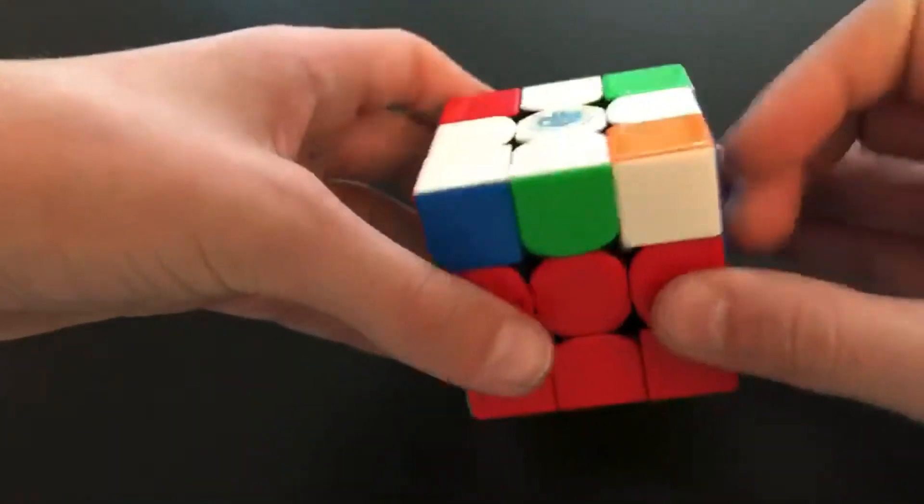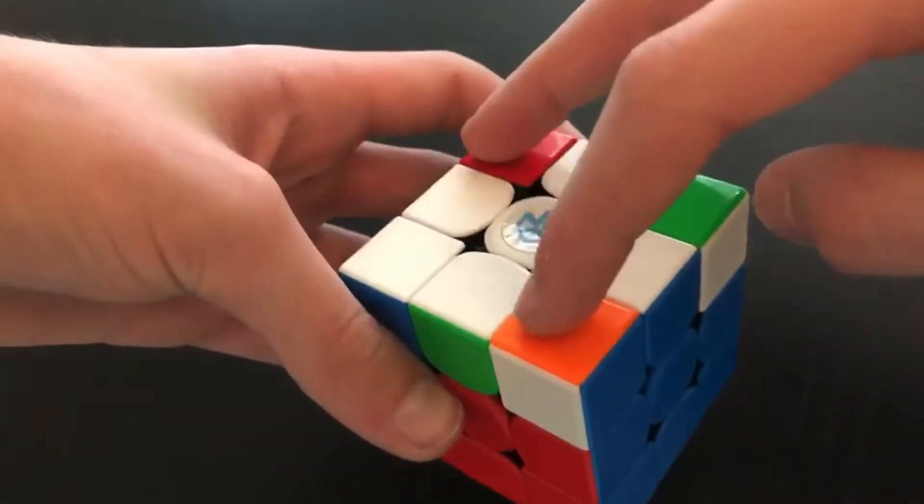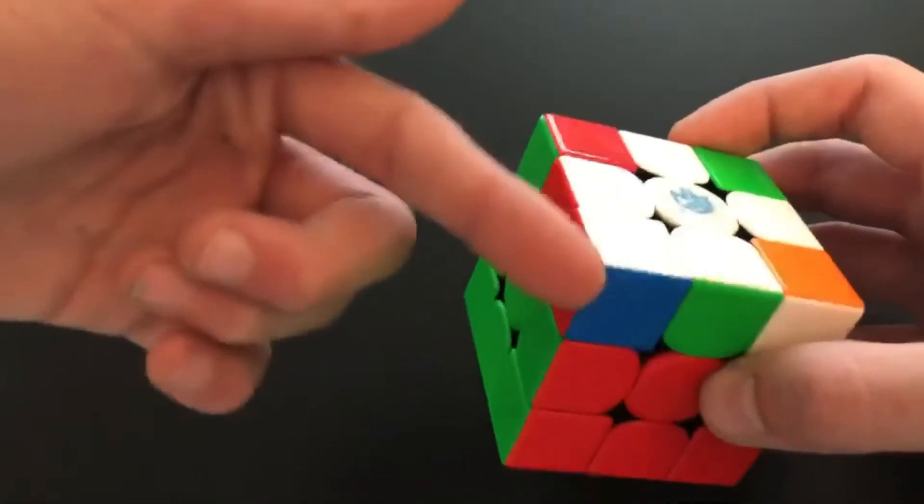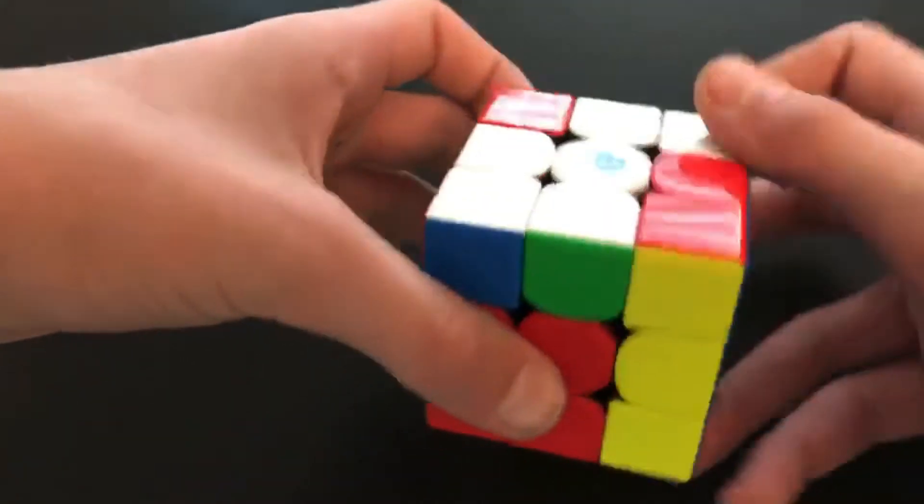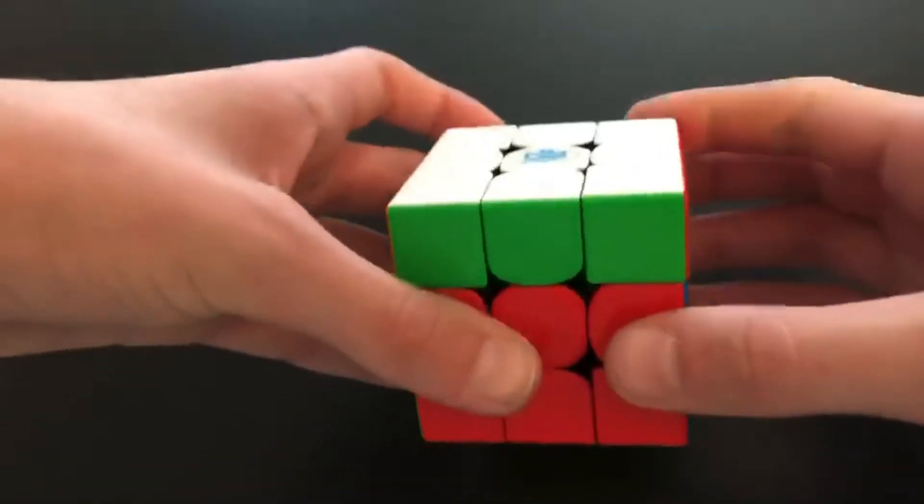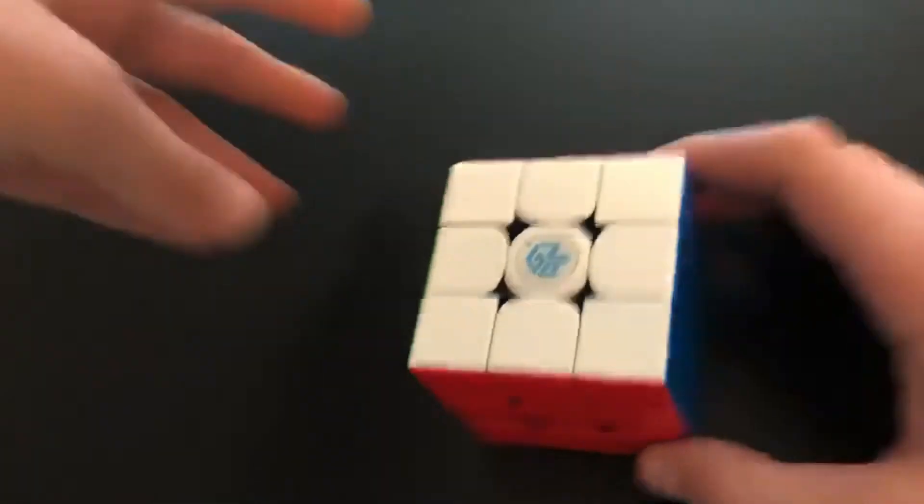And then here for OLL, I saw that these two were opposites and these two were opposites, and I saw this block, so I knew it was going to PLL skip. And then U A U F.